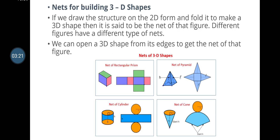Nets for building 3D shapes: if we draw the structure of a 2D form and fold it to make a 3D shape, it is called the net of that figure. Different figures have different types of nets. We can open a 3D shape from its edges to get its net. Imagine any cardboard box — if you open it into a flat sheet of cardboard, that is called a net.